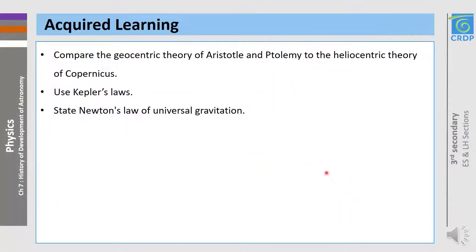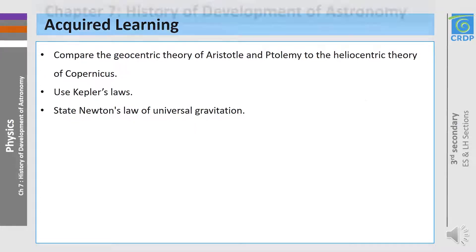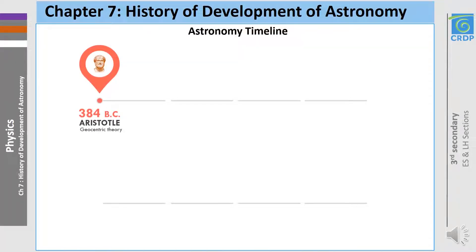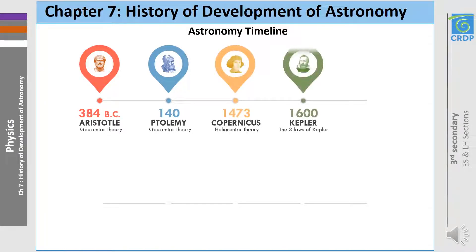During this session we learned to compare the geocentric theory of Aristotle and Ptolemy to the heliocentric theory of Copernicus, to use Kepler's laws, and to state Newton's law of universal gravitation. Now I will leave you with the astronomy timeline, references and links. See you next time in another session.